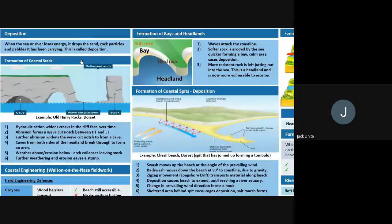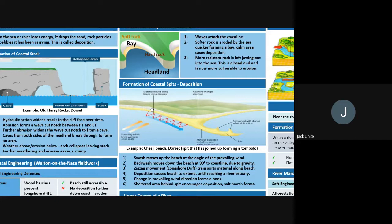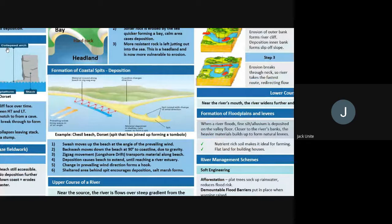We'll start with transportation. Weathering and erosion occur at the same sort of time — weathering is in situ, in one place, while erosion happens along rivers and coasts where there is water. Once material has been transported, when a river or the sea loses energy it drops that material — sand, rock particles, or pebbles. This process is called deposition, in the same way you deposit money in a bank. At the coast, longshore drift, a form of transportation and deposition, helps create coastal spits.